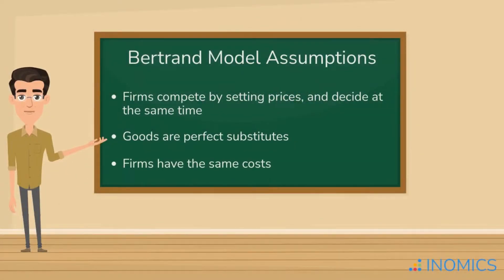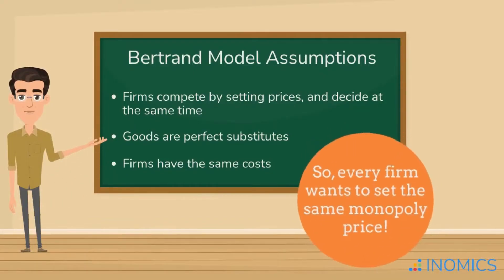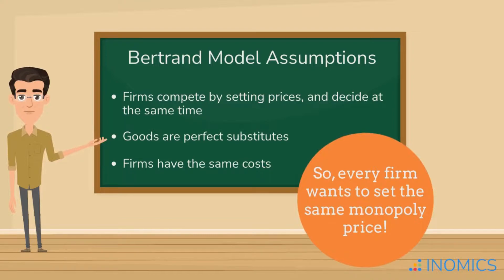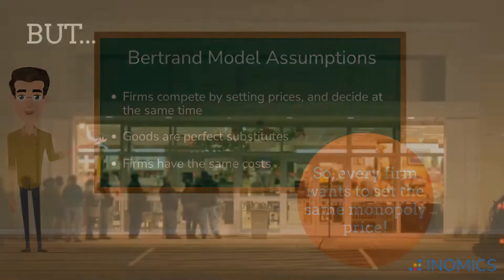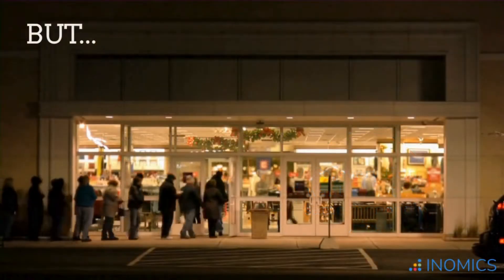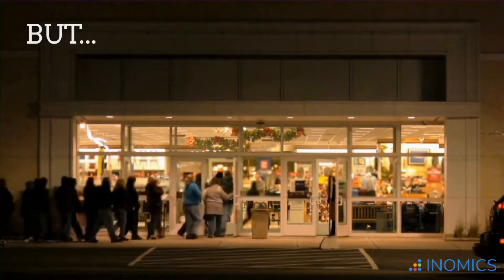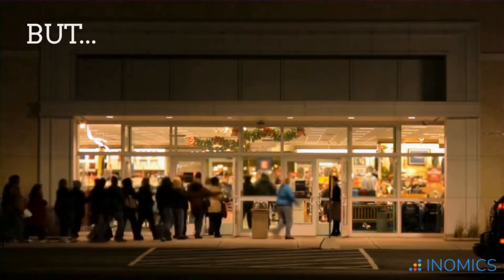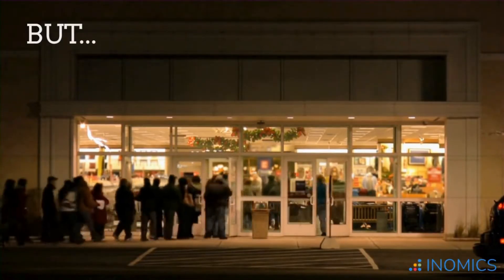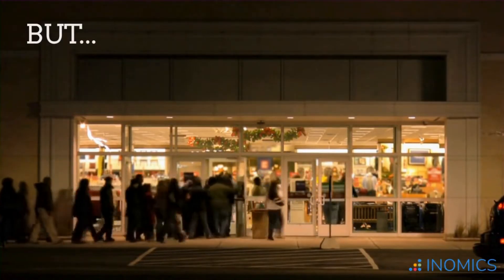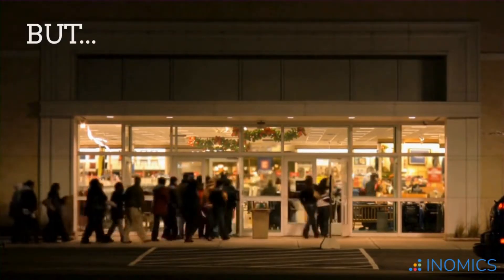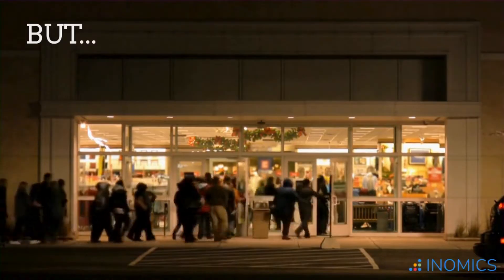So each firm wants to set its price at the same monopoly price to maximize its profits. But there's a catch. If even one firm sets its price slightly below the monopoly price, it will suddenly capture all of the market share since buyers will flock to the cheapest price. Remember, these goods are perfect substitutes.